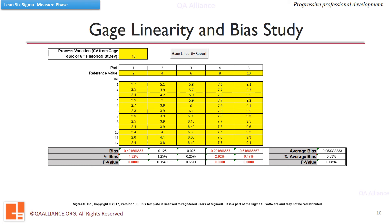If the gauge measures low at small reference values and high at large reference values, there may be a statistically significant slope. The p-value for slope shows the significance, which indicates large linearity. In this situation, the bias values are positive at one extreme and negative at the other, making the overall bias impractical to interpret. We can also say that bias is not significantly present as the p-value is not less than 0.05 for reference sizes 4 and 6.